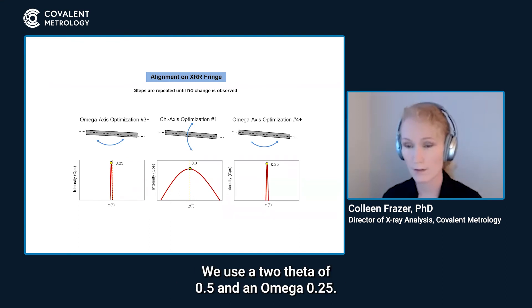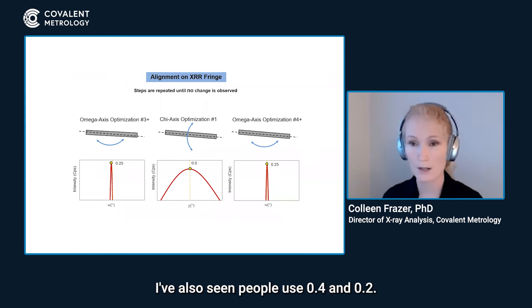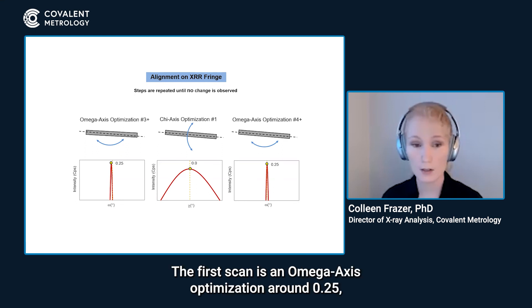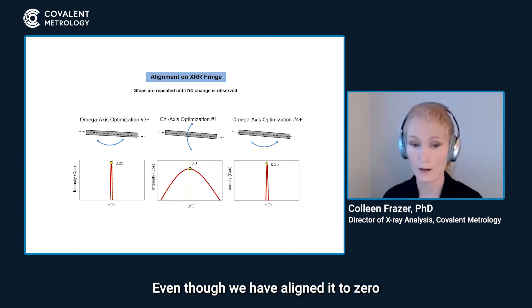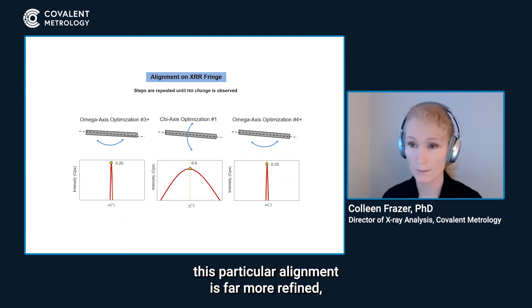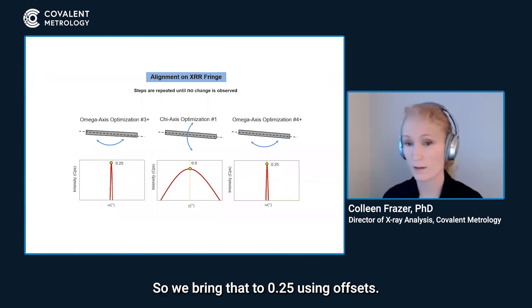We use a two theta of 0.5 and an omega of 0.25. I've also seen people use 0.4 and 0.2. Anything in that range is fine. It doesn't have to be a very specific number. The first scan is an omega axis optimization around 0.25 and you can see that our peak is not exactly at 0.25. Even though we have aligned it to zero in the previous steps, this particular alignment is far more refined, far more sensitive. So it's not unusual for that first omega axis optimization at the fringe to actually be a little bit off. So we bring that to 0.25 using offsets.